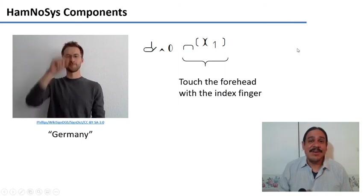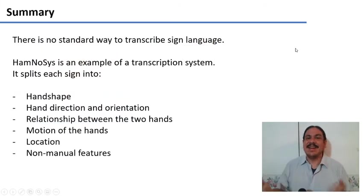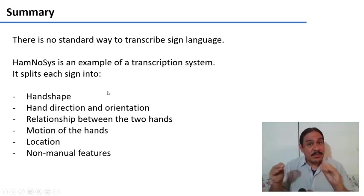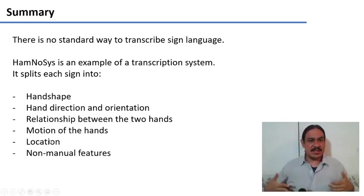So that's an example of how you can transcribe phonetically a sign from a sign language. There's no standard way to do it. There's several systems. I showed you just one of them. However, HamNoSys is very good for narrow transcriptions. As you can see, it gives you a lot of details. And it decomposes each sign into its hand shape, the direction and orientation of your hands, the relationship between the two hands, the motions of the hands, the location on which the sign is produced, and any non-manual features that may accompany it. So as you can see, you describe it in pretty much the same way as a spoken language.